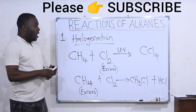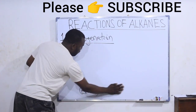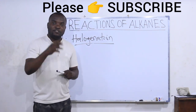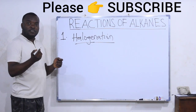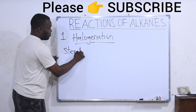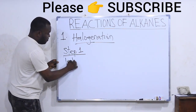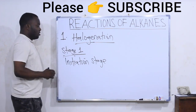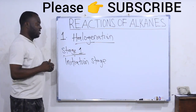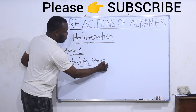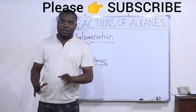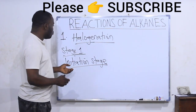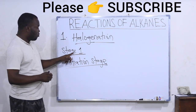Another important thing you need to know about halogenation is that the halogenation reaction takes place in three stages. Those three stages are: stage one — the initiation stage, stage two — the propagation stage, and stage three — the termination stage. Before a halogen can react with an alkane, three things happen — there are three steps the reaction passes through before the product is formed.